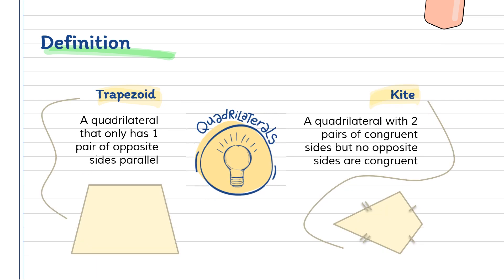Now, let's go on to our next set of quadrilaterals. First, we have our trapezoid. It is a quadrilateral that only has one pair of opposite sides parallel — the top side and the bottom one.